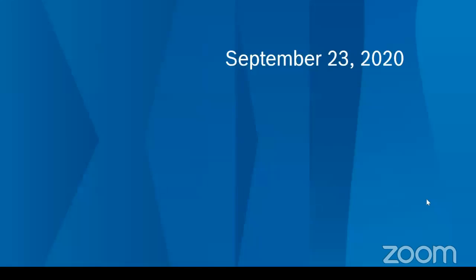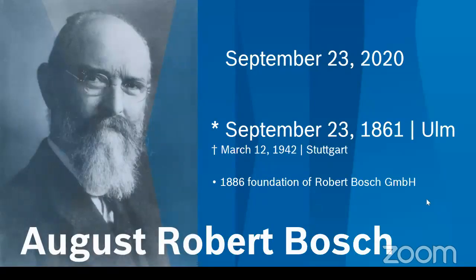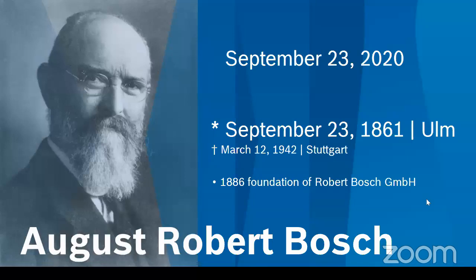My name is Joshua, and as already introduced, I work for Bosch.io as an IoT Suite consultant. Before we move on with our topic of edge computing, it's my great pleasure to share a very exciting fact: today is September 23rd, which is the birthday of August Robert Bosch. Maybe there are some facts you didn't know about him — for example, that his first name was August, and he founded the Robert Bosch company at the age of 25. This is very impressive, especially when we think how the Bosch company has grown over the years in so many different industries. Today Bosch is a very successful global player in so many different aspects of life, and also in IoT and edge computing.